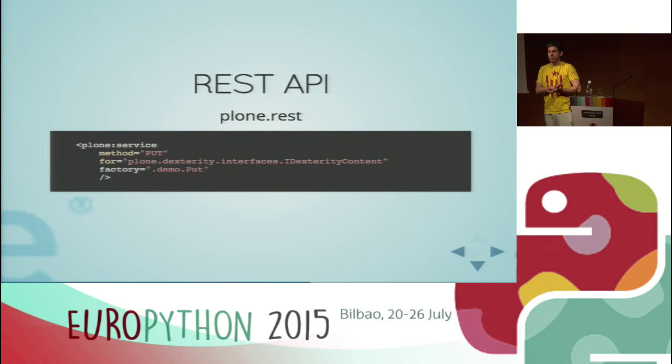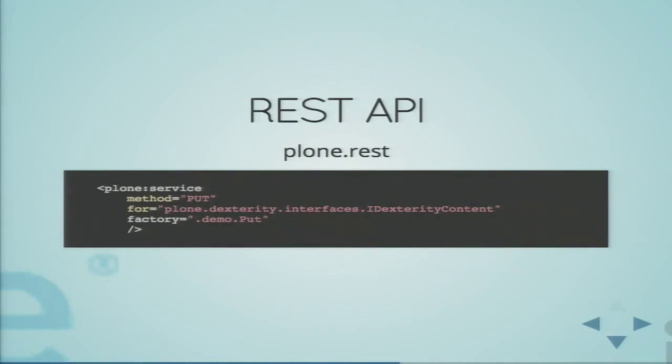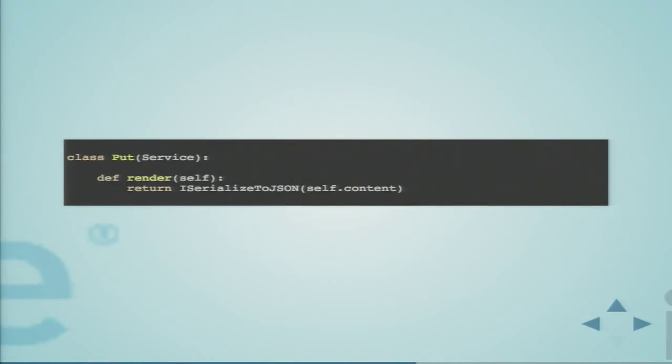New things we are working on for the next months: the Plone REST API. It's really clear that all web applications are going to move to JavaScript and all UI needs to be done in JavaScript. What's really needed is a cool REST API to interact with Plone. We created plone.restapi - not released yet but coming very soon. You can try it on GitHub. We've defined a way to use HTTP verbs like PUT, GET, DELETE on specific content types.